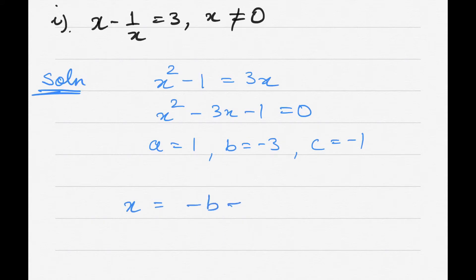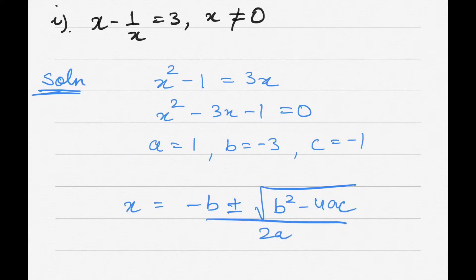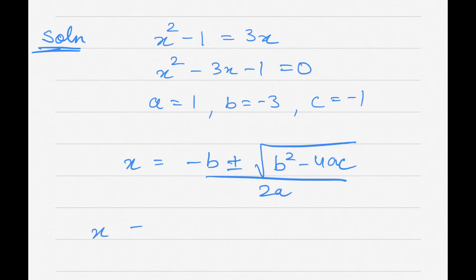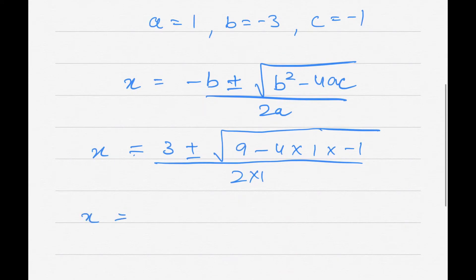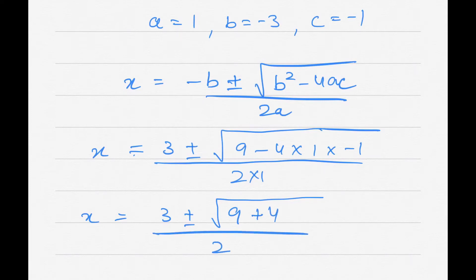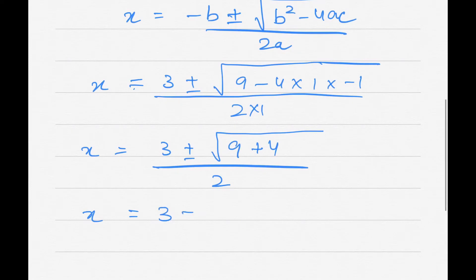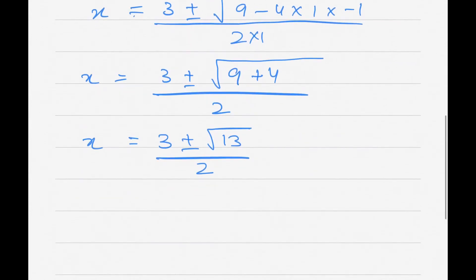The quadratic formula is x = (-b ± √(b² - 4ac)) / 2a. Substituting: -b becomes +3, b² = 9, and -4ac = -4 × 1 × (-1) = +4. So we get x = (3 ± √(9 + 4)) / 2 = (3 ± √13) / 2.